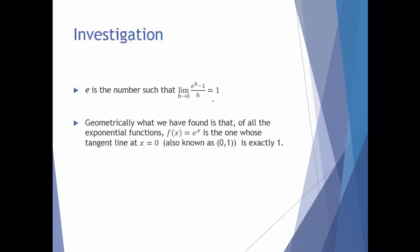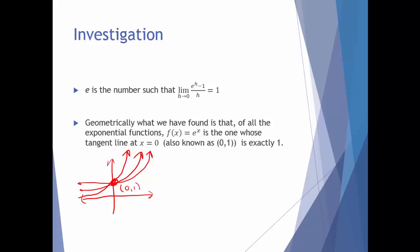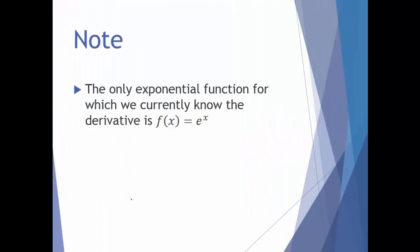If you want to look at it geometrically — meaning graphically — of all the exponential functions, f of x equals e to the x is the one whose tangent line at x equals 0, at the point (0,1), has slope exactly equal to 1. They all pass through that point, but e to the x is the one whose tangent line slope at that point is exactly 1. So we've come to a nice conclusion: the derivative of e to the x is e to the x.